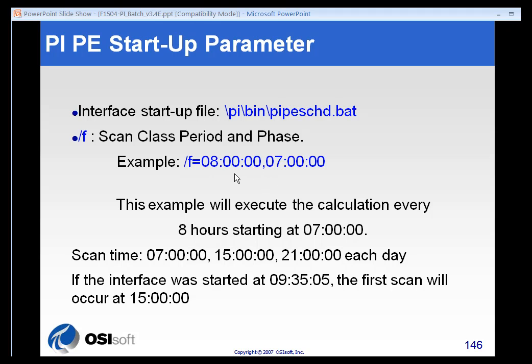Here's an example of an 8-hour scan where we've got hours, minutes, seconds. And there's an offset of 7 hours, 0 minutes, 0 seconds. So that means that this calculation will occur every 8 hours starting at 7 a.m. each day. So 7 a.m. and 3 p.m. and then we can go all the way out to 9 p.m. That is when the scans will occur. So if the interface starts up at 9:30, the first scan will occur at 3 p.m.